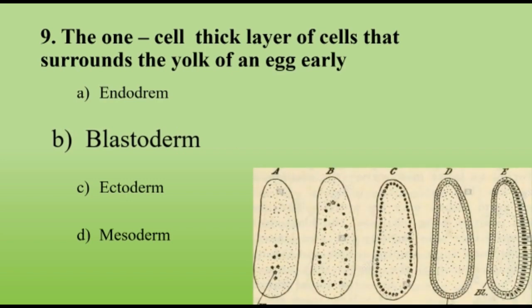The one-cell-thick layer of cells that surrounds the yolk of an egg early is the blastoderm. Blastoderm formation is an important event during pre-embryonic development of insects. Initially after fusion of male and female gametes, a zygote is formed. The zygote then divides mitotically, producing a mass of cells without definite cell walls surrounded by an island of cytoplasm — these are called energids. In the later stage, these energids move to the periphery, attain definite cell walls, and form a one-cell-thick layer surrounding the yolk region, called the blastoderm.